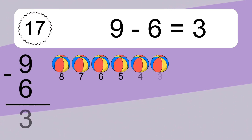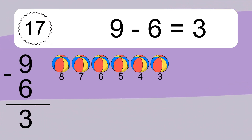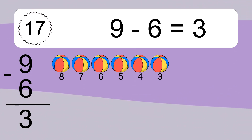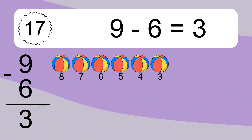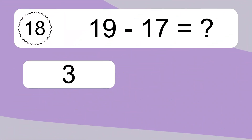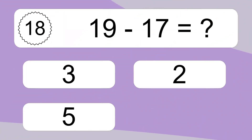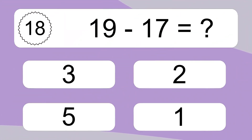9 minus 6 equals what? 9 minus 6 equals 3. Let's count it! 8, 7, 6, 5, 4, 3. 19 minus 17 equals what?